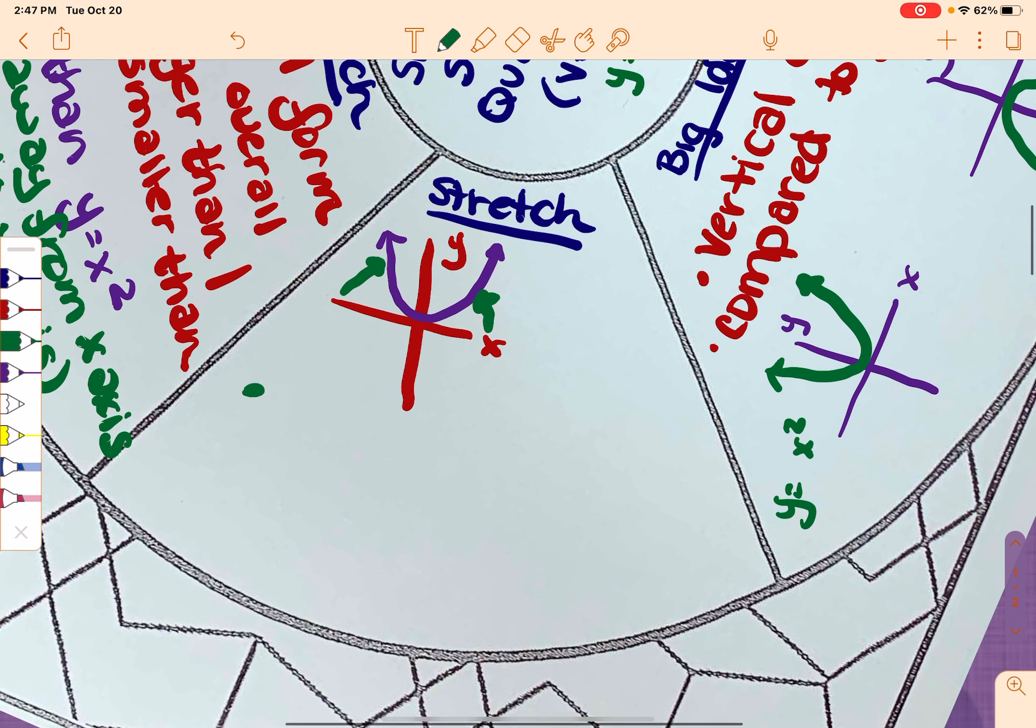Now, an example of this would be y equals 2x squared or y equals negative 4x squared. Okay, because again, that number in front is bigger than 1 or smaller than negative 1.